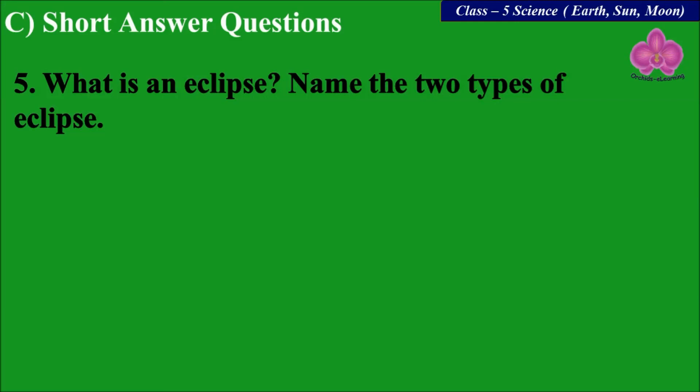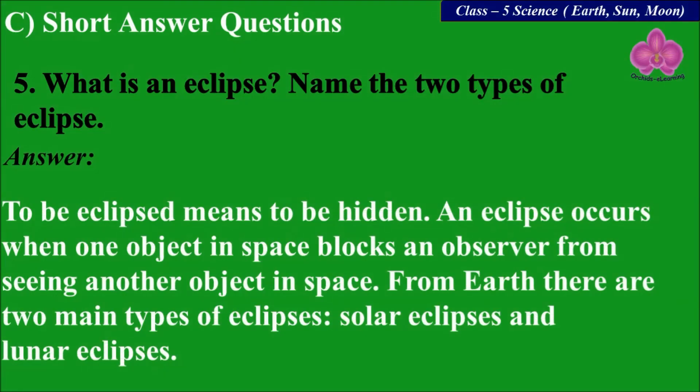What is an eclipse? To be eclipsed means to be hidden. An eclipse occurs when one object in space blocks an observer from seeing another object in space. From Earth, there are two main types of eclipses — solar eclipse and lunar eclipse.